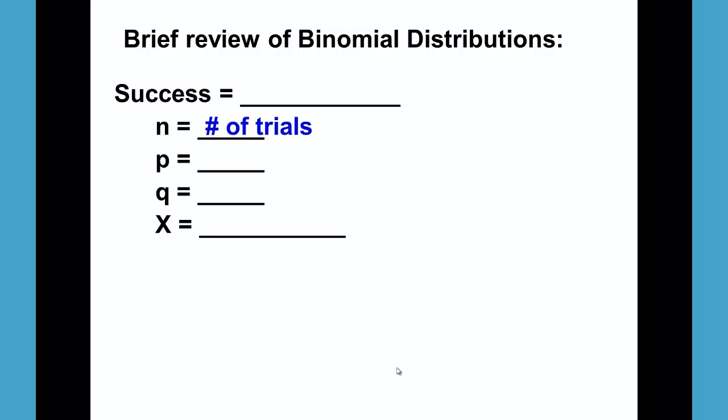As a brief review of binomial distributions, remember that we need structure. You should always label your success, which is found in the problem. You should label your number of trials n, your p, your probability of success.